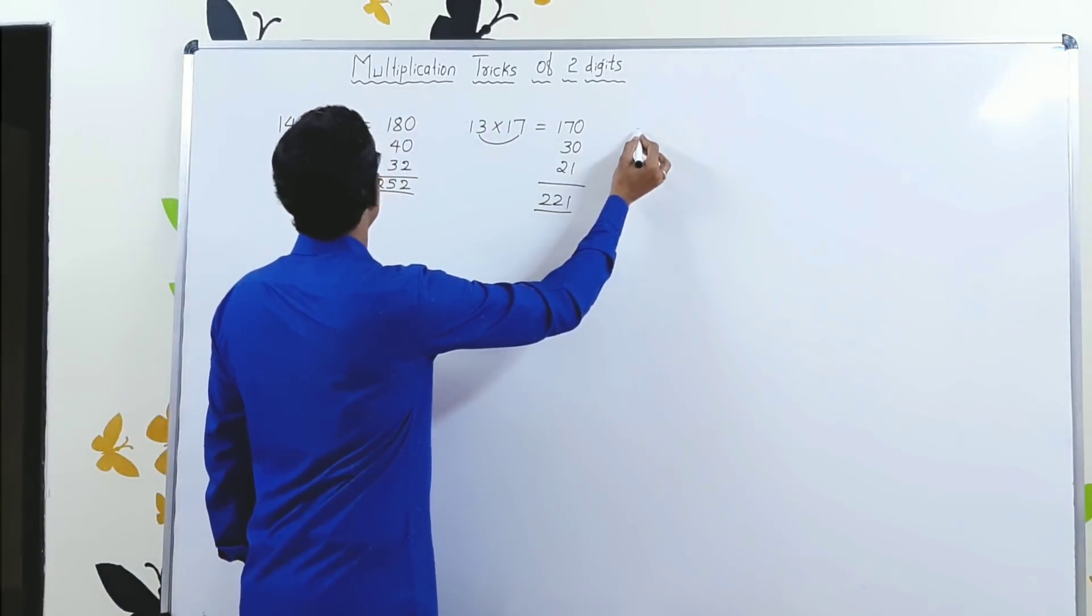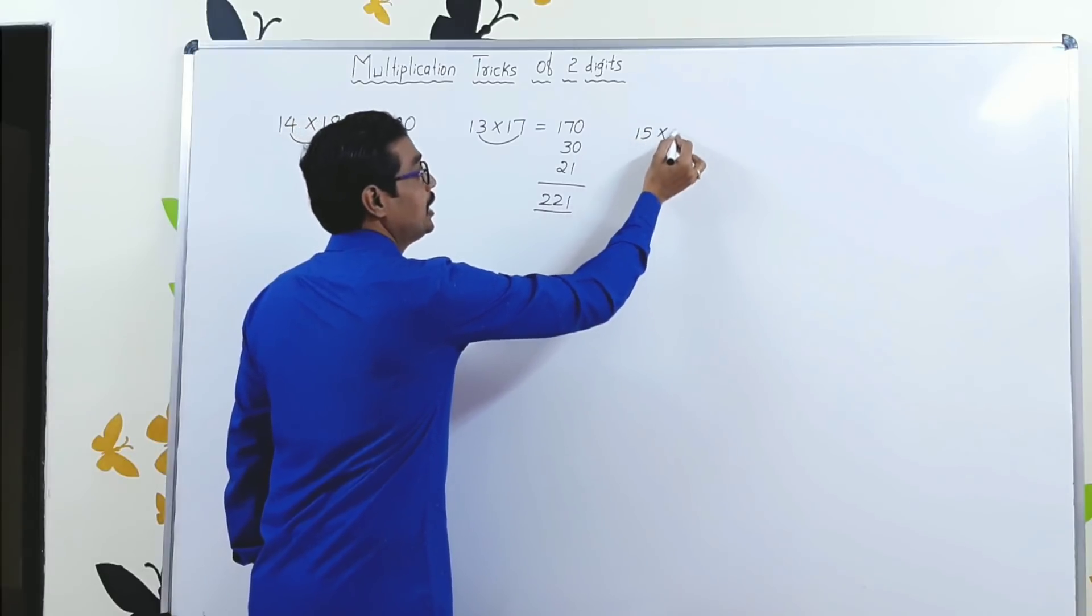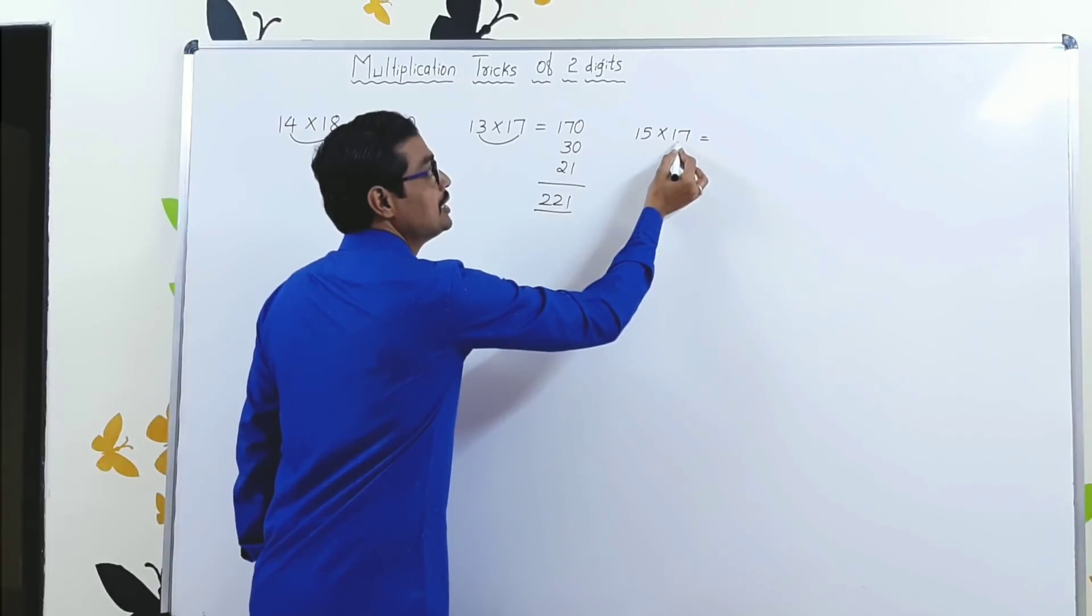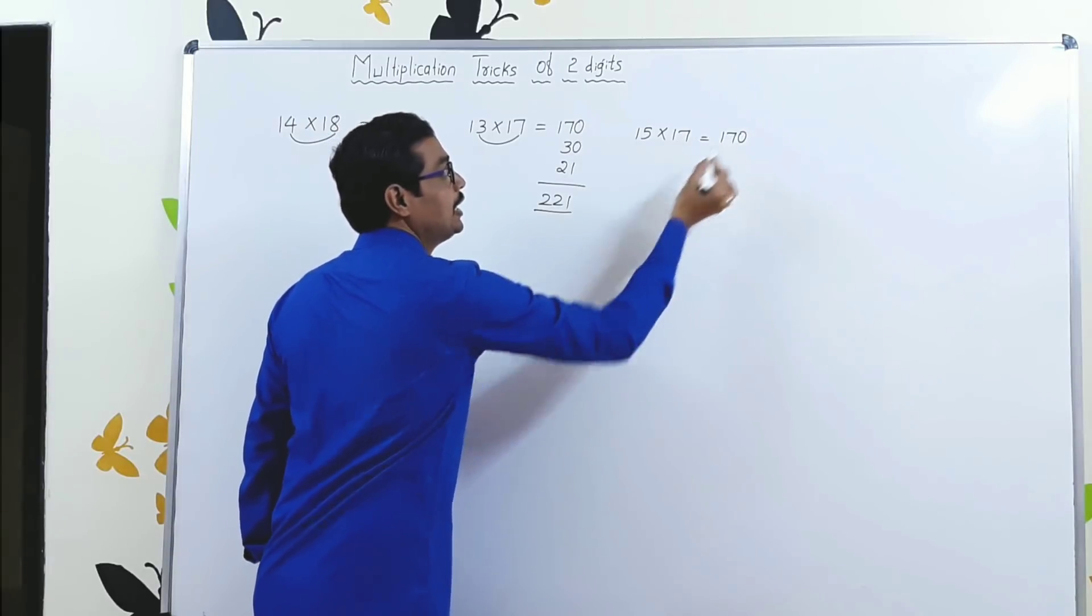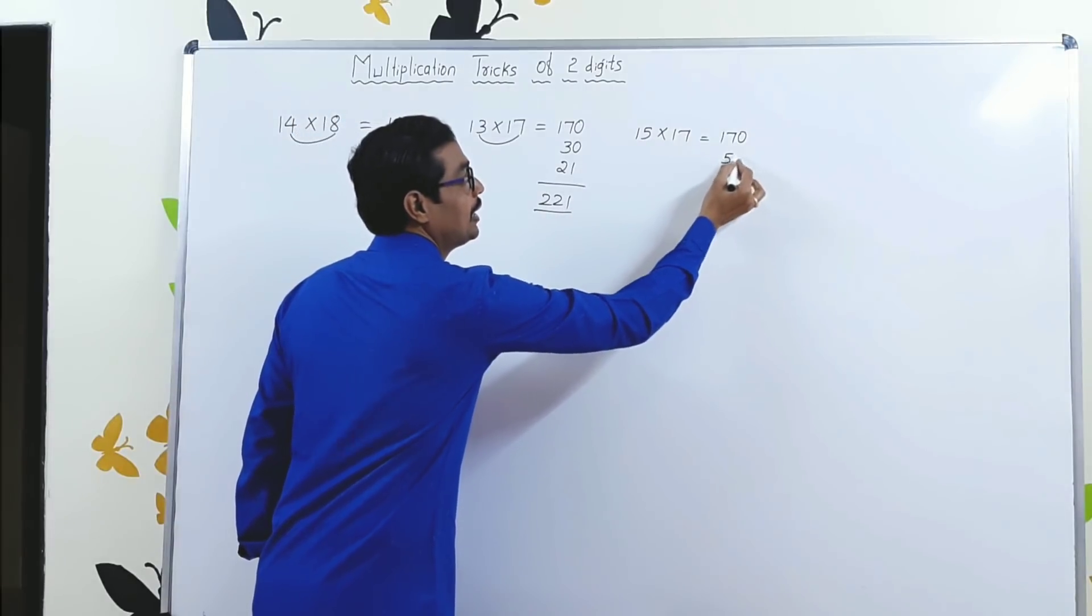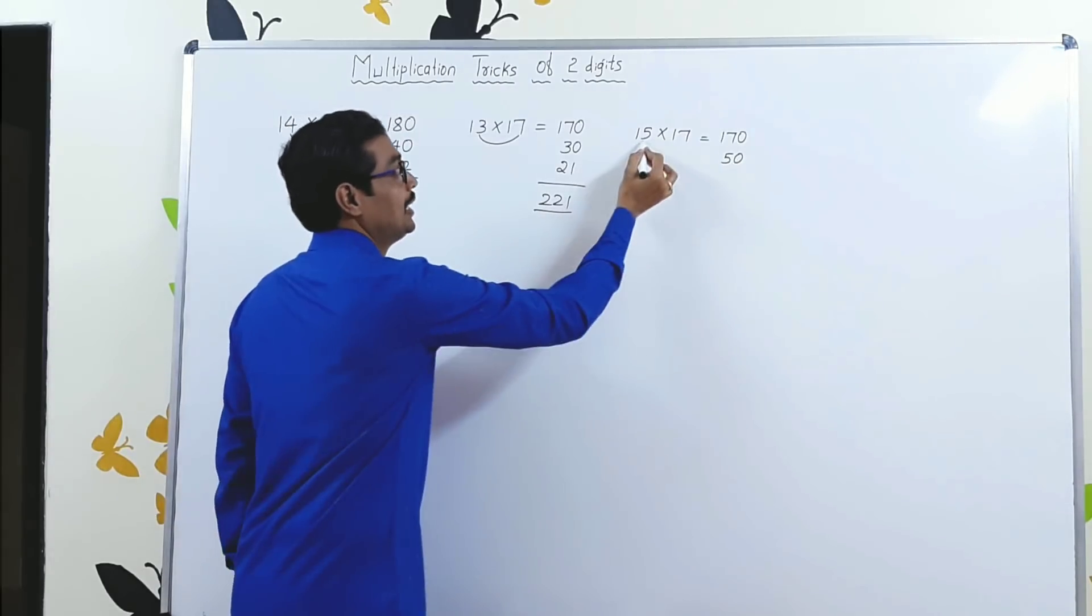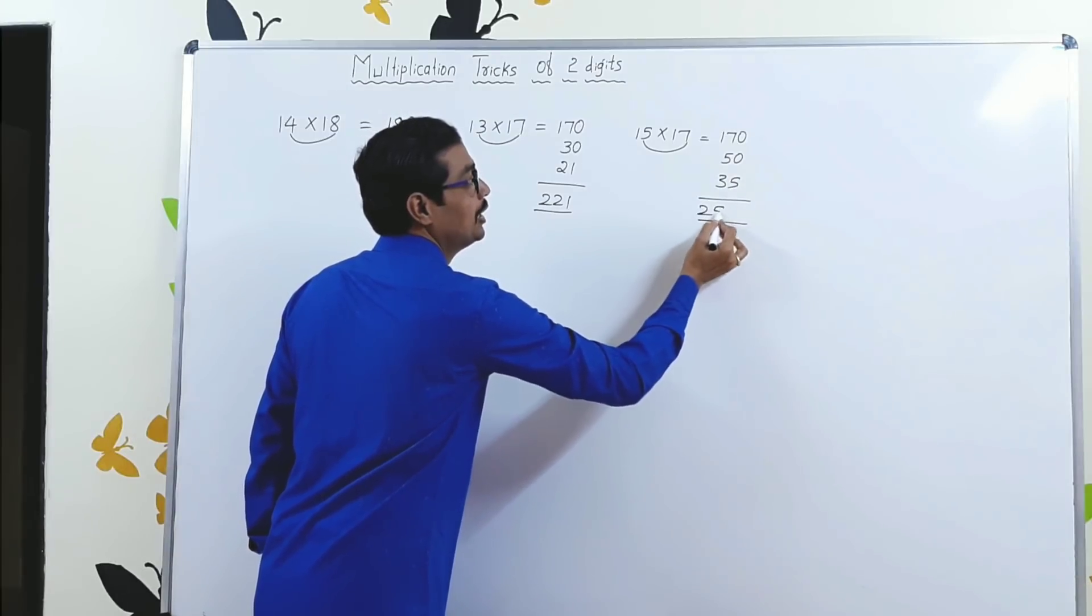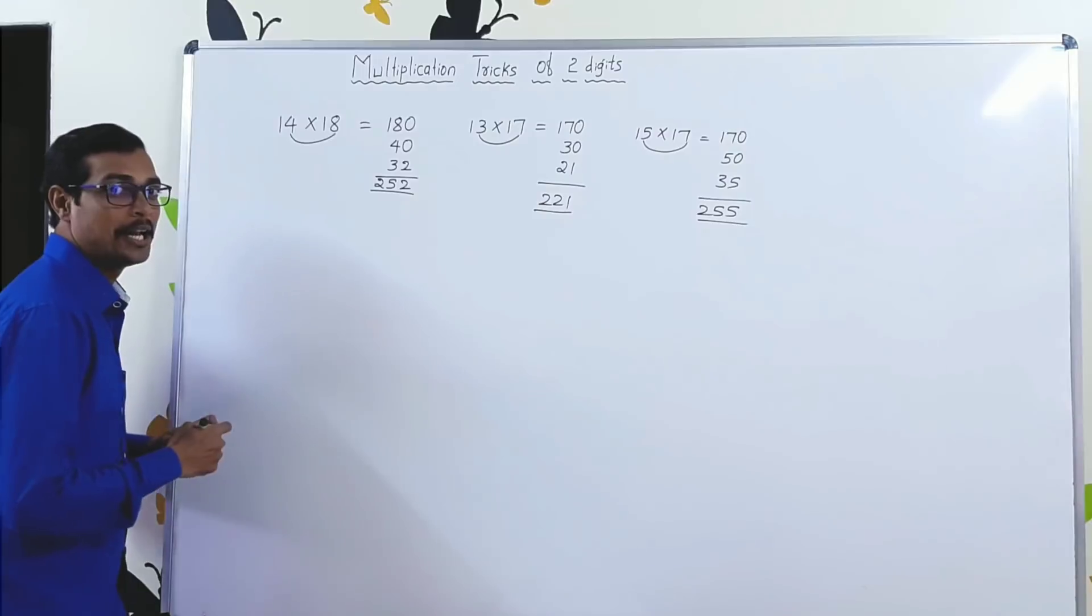Next example. 15 × 17. Very simple. 17, write it as 170. 5, 50. 5 × 7 is 35. So total 255.